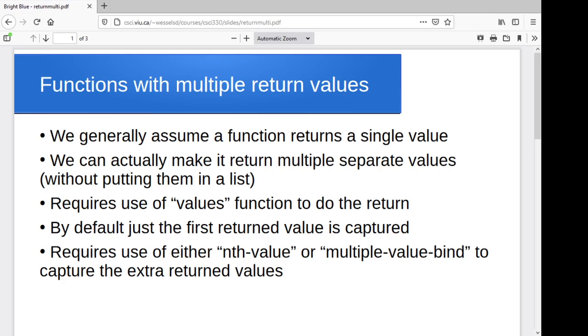It's pretty common practice if you've got multiple things you want to return to stick them in a list and then whoever calls the function gets the things that they want out of the list, but we can actually have a function return multiple separate values. So there's a special function that allows us to do this in the function itself, and then a special way to retrieve the values on the caller side.